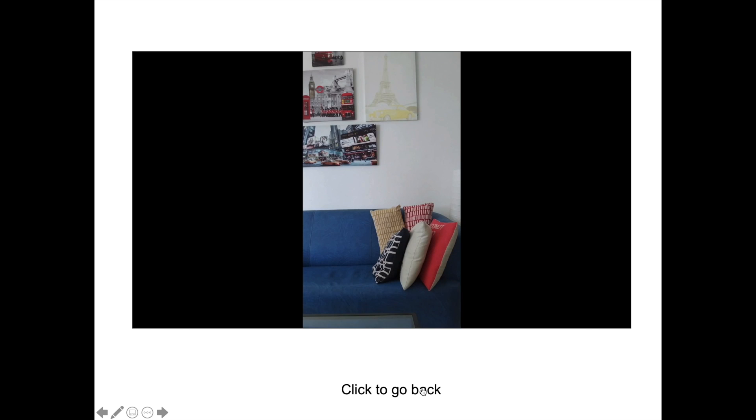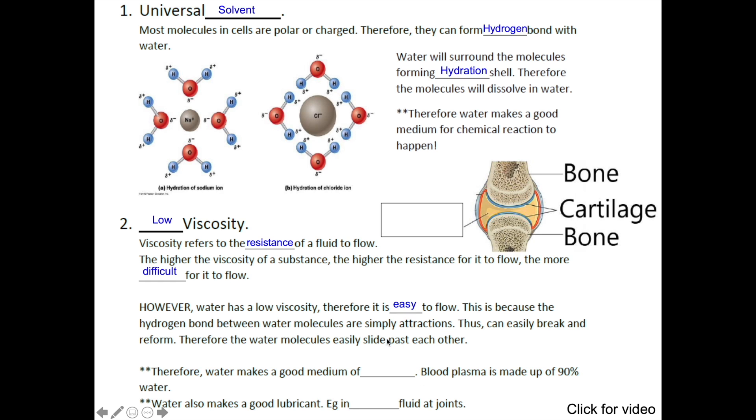Since water is easy to flow, or water has low viscosity, therefore water makes a good medium of transport. Blood plasma is made up of 90% water.